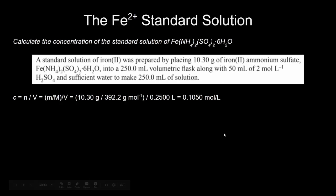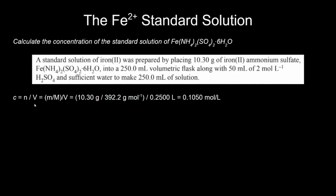So let's first make up that standard solution of iron(II). We have this mass and this volume, and we're going to use two equations from Level 2 NCEA: C = n/V, and moles = mass divided by molar mass. And we end up with this standard concentration of iron(II).